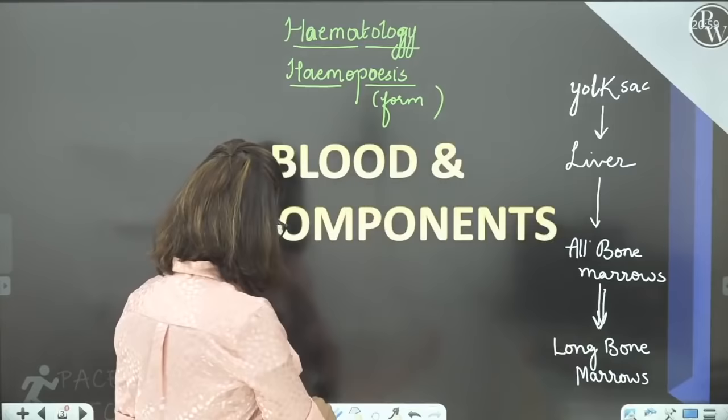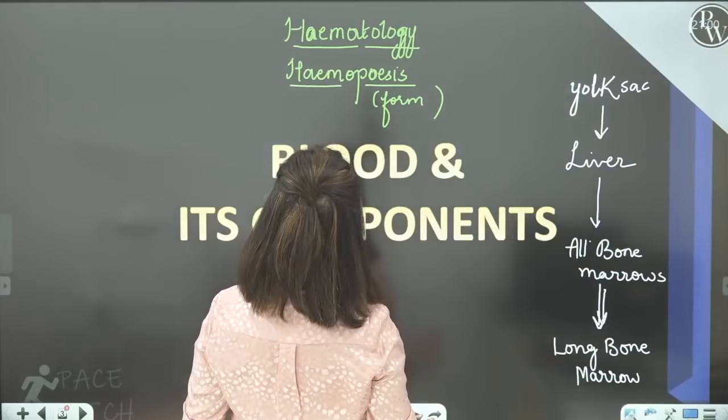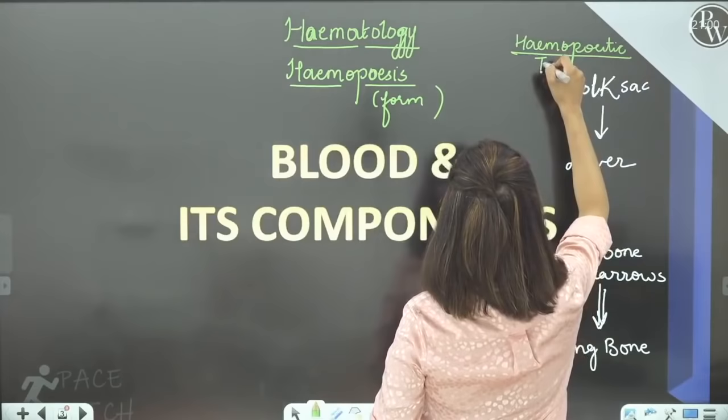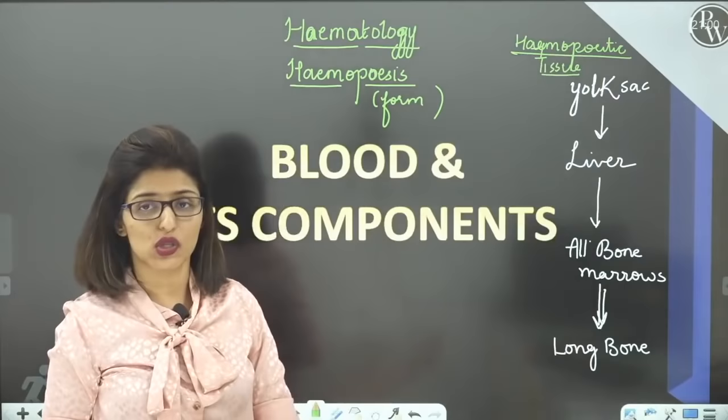In sab tissues ko hum kya bol dete hain? Hemopoietic tissue — jahan blood ki formation ho, that will be known as hemopoietic tissue. These are the hemopoietic tissues at different times of life: yolk sac, then liver, then all bone marrows, and then long bones only.